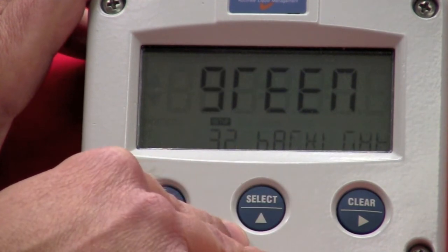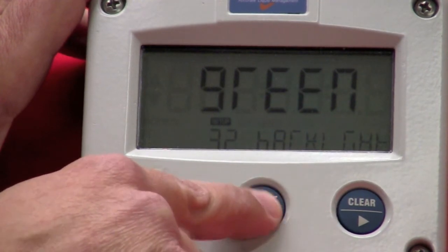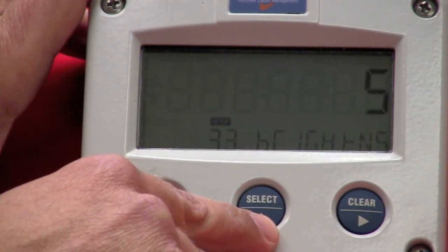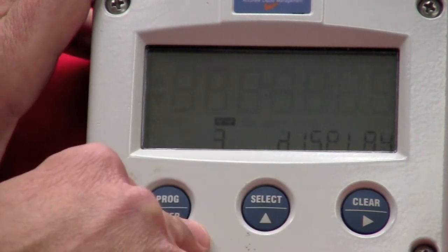If I go up, this talks about the backlight. Do you want it on or off? Right now I have it turned off. Brightness. You can change the LCD brightness of the unit. And then you're back to the top of the menu.